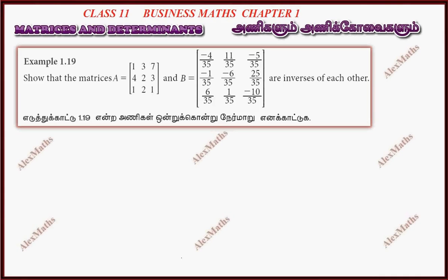Hi students, this is Alex here. Example 1.19: Show that the matrices A and B are inverses of each other.